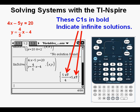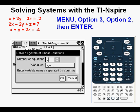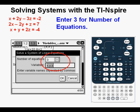Now we have this system with three equations and three unknowns: X plus 2y minus 3z equals negative 2, 2x minus 2y plus z equals 7, and x plus y plus 2z equals negative 4. Go to Menu, down to Option 3, Algebra, then Option 2, Solve System of Linear Equations, then Enter. For this system, we need to enter three equations, then the variables x, y, and z. When we change the number of equations to 3, the variables automatically become x, y, and z. Tab down to the OK button and press Enter.